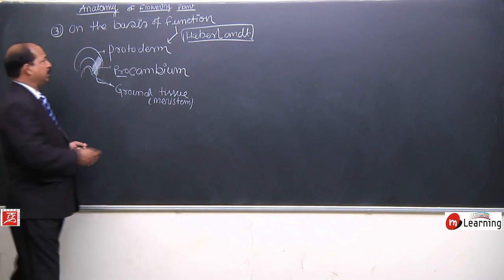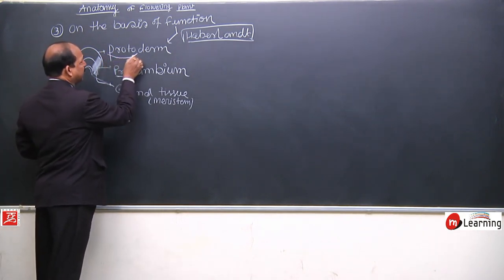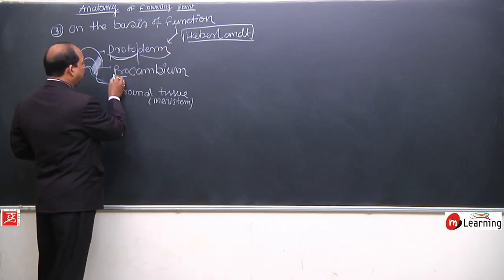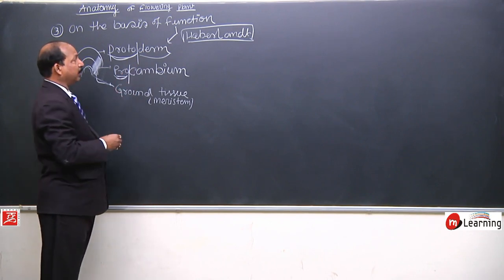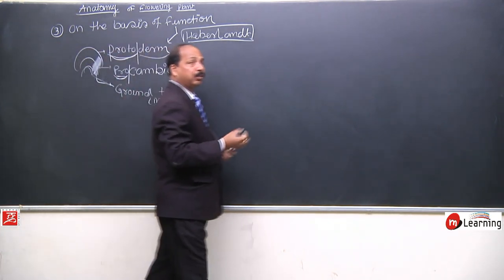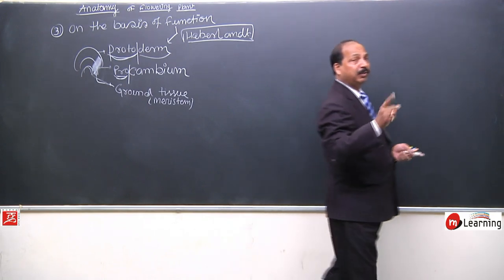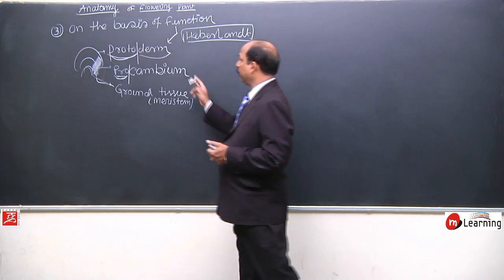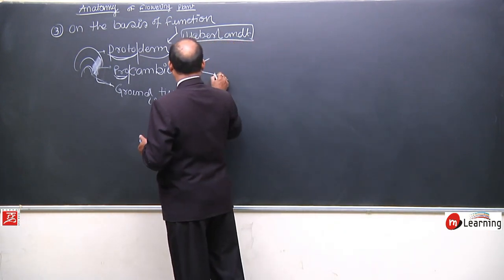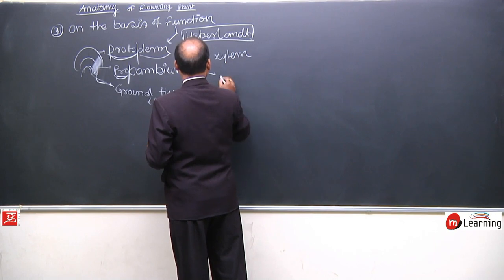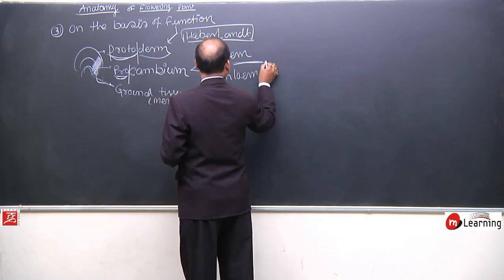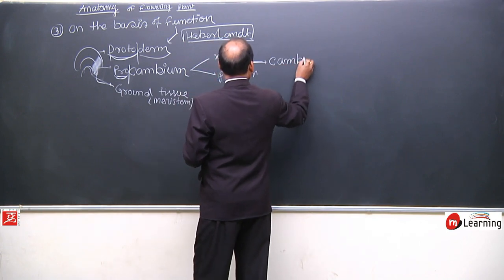A scientist — Haberlandt — divided meristematic tissue on the basis of function into three parts: protoderm, pro-cambium, and ground meristem. You have already learned how these terms are formed. Proto means primitive, derm means skin. Cambium means the tissue that will divide.